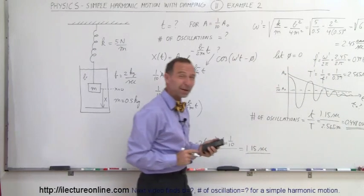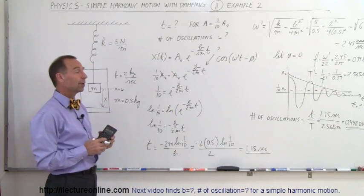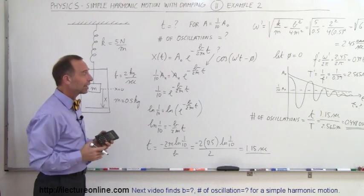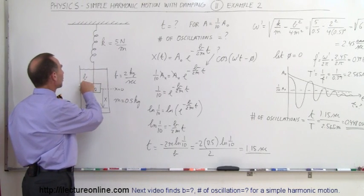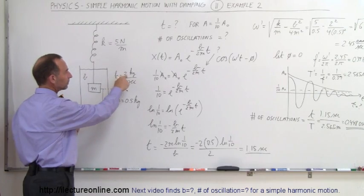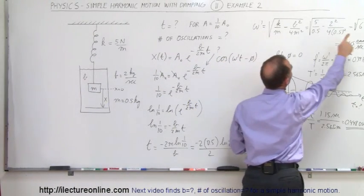Yeah, didn't pick my number very well, did I? So how could we change that? How could we improve that problem so there would be a number of oscillations in order to get down to 1 tenth of the original amplitude? Of course, that would require a smaller b. If b was smaller, this was a smaller number, we come up here, that means the frequency would be greater.